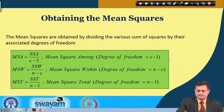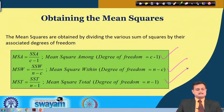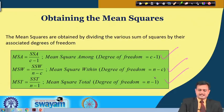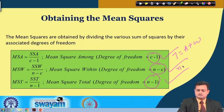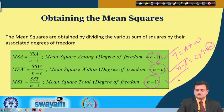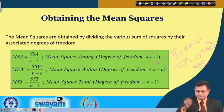As a summary of equations: MSA = SSA / (C - 1), MSW = SSW / (n - C), and MST = SST / (n - 1). The total degree of freedom n minus 1 equals among C minus 1 plus within n minus C. If you equate total equals among plus within, the terms cancel and you get n minus C for MSW. This is a very simple way to find the degree of freedom.